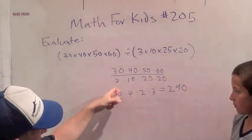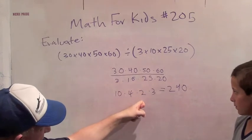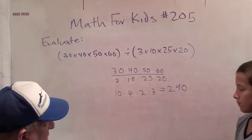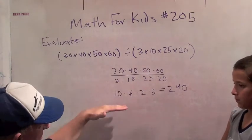30 divided by 3 is 10. 40 divided by 10 is 4. 50 divided by 25 is 2. 60 divided by 20 is 3. And now we just have to multiply this out.